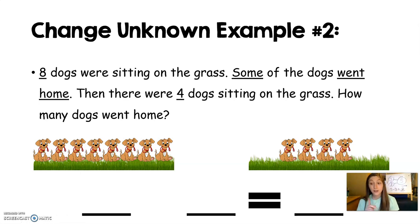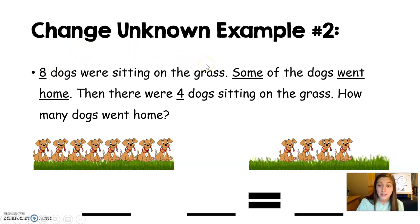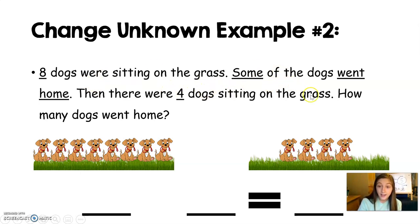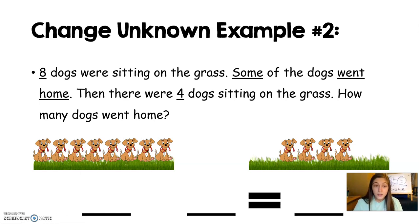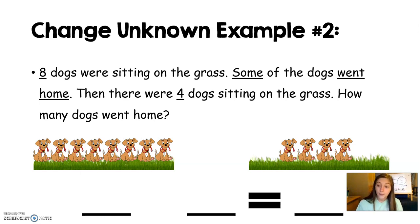First I'm going to read it to you and I want you to listen closely. Eight dogs were sitting on the grass. Some of the dogs went home. Then there were four dogs sitting on the grass. How many dogs went home? That's a lot of words. What we're going to do, like we always do when we solve a word problem, is start by writing a number sentence — going through each part of the problem to make our number sentence.